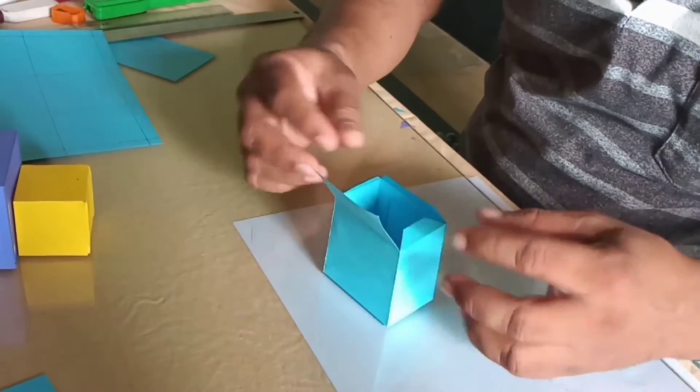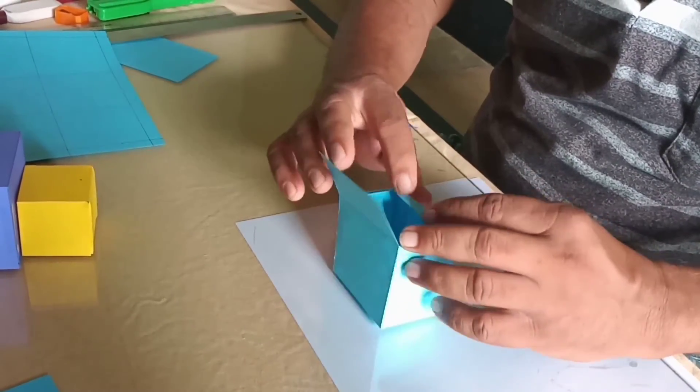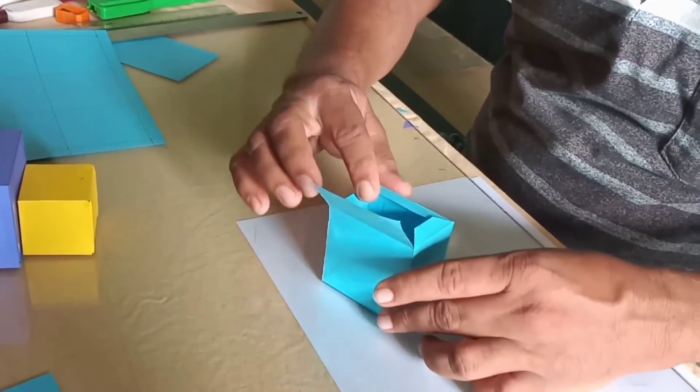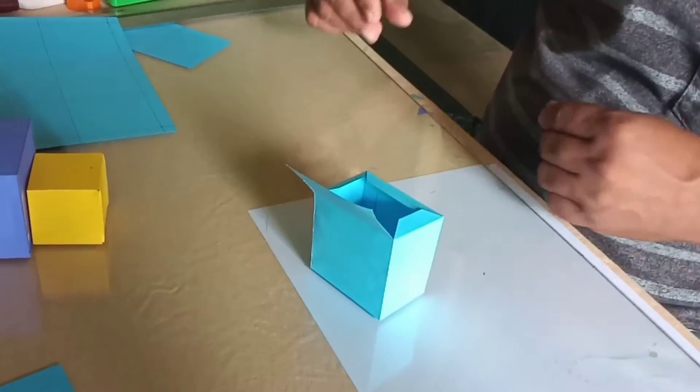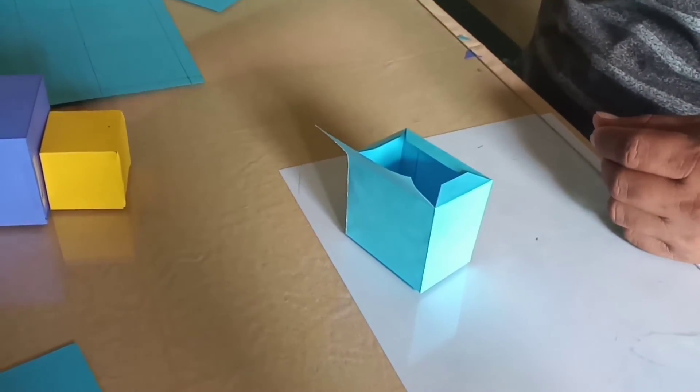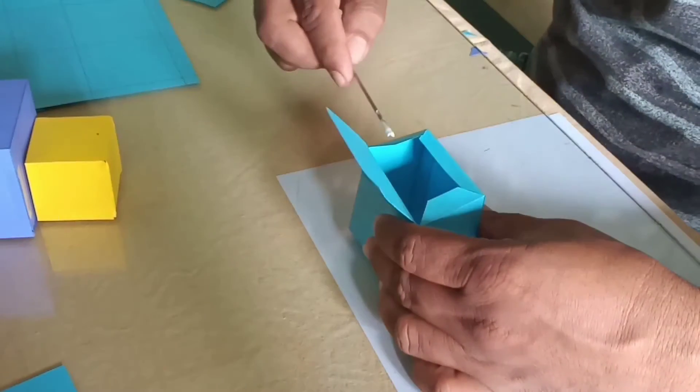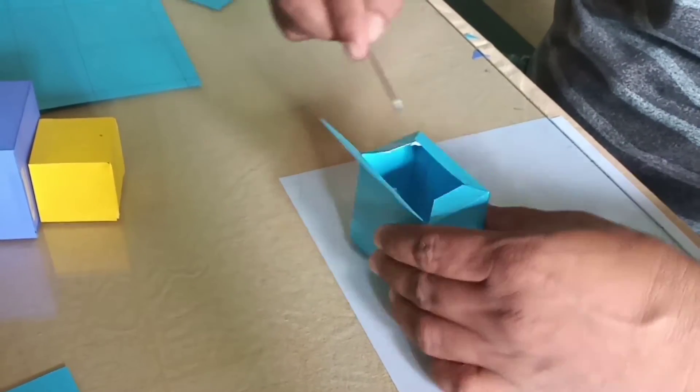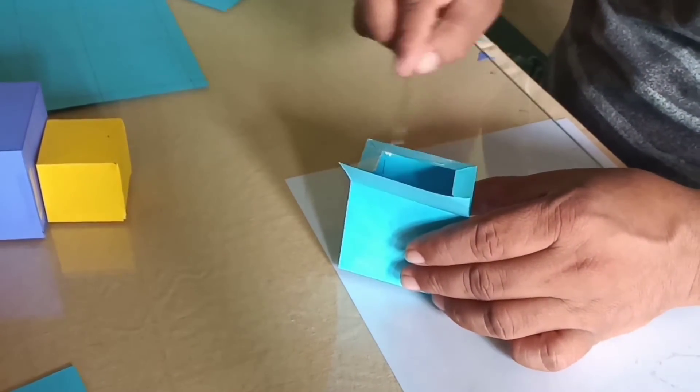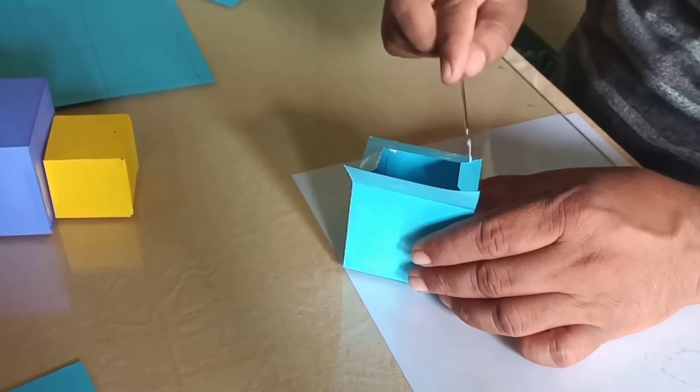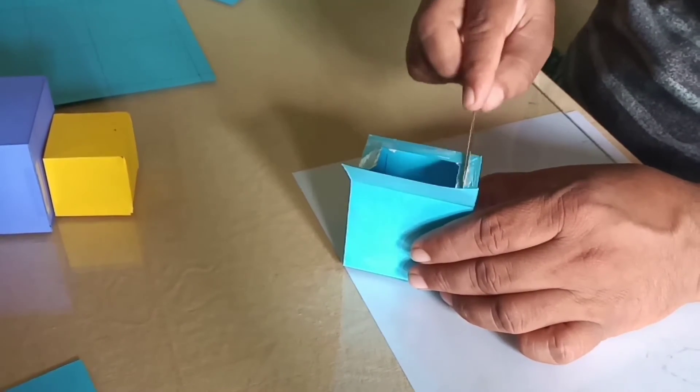Make sure you press on these edges. So this is the last face of the cuboid. We just apply glue on the tabs, on these three tabs.